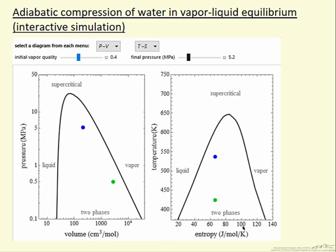Essentially, we have a starting point before the compression. That corresponds to the green point, so this is initial vapor quality of 0.4, and so it's here on the pressure-volume diagram. You have to keep in mind this log scale, with the vapor occupying much more volume than the liquid.